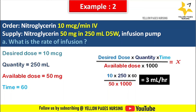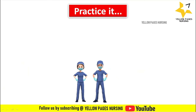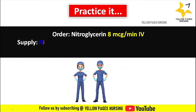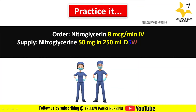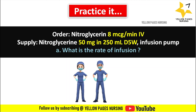Now for your practice: doctor's order is nitroglycerin 8 microgram per minute IV. Supply: nitroglycerin 50 mg in 250 ml D5 water, infusion pump. What is the rate of infusion? You can do the calculation and mention the answer in the comment box.